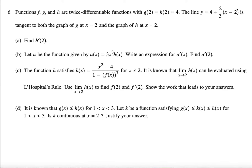The line y equals, given over here, is tangent to the graph. The word tangent means they have the same slope but also share a point. Both tangent to the graph g at x equals 2 and then h at x equals 2.